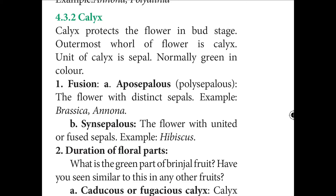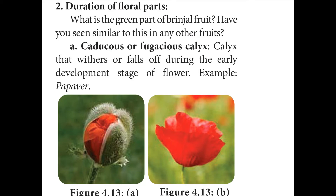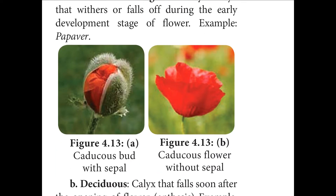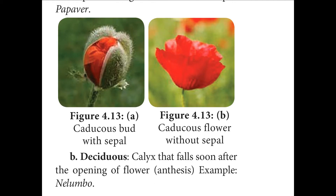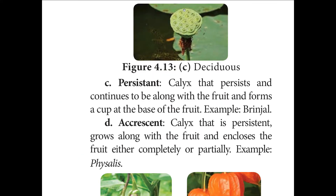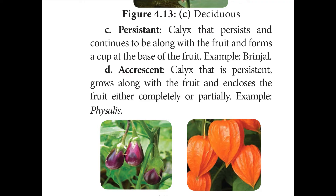Based on duration of floral parts, calyx is classified into: caducous (fugaceous) — calyx falls off during the early developmental stage, example: Papaver; deciduous — calyx falls soon after the opening of the flower, example: Nelumbo (lotus); persistent — calyx persists and continues with the fruit, forming a cup-shaped vase, example: brinjal; and accrescent — calyx persists and grows along with the fruit, enclosing it completely or partially, example: Physalis.